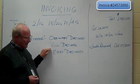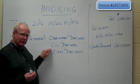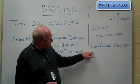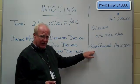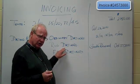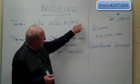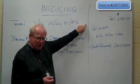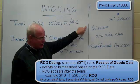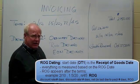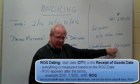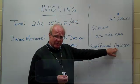There's another dating method called ROG, or receipt of goods. In this example, if the goods were received on October the 27th and it was ROG dating — you would know it's ROG because at the end of the terms it would actually say ROG. That would mean in the calculator, date one would be October the 27th, 2010.